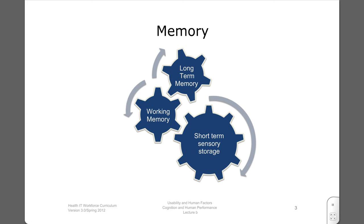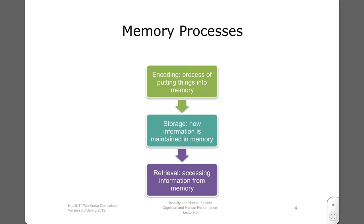We will be talking about working memory and long-term memory in a minute or so. It is useful to think about three kinds of memory processes, including encoding, which involves the process of perceiving, processing, and transferring the memory to more or less permanent storage. The form of information or knowledge is stored in long-term memory. Retrieval refers to the process of accessing information from memory.